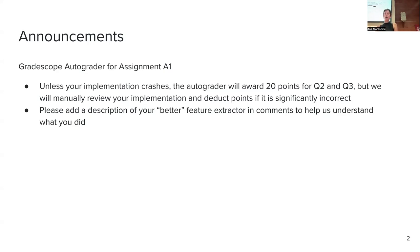Just a heads up: for Q1, the instructions require you to reach a certain level of accuracy and depending on what accuracy you achieve we are awarding some points. However, for Q2 and Q3 the instructions are to try the other feature representation and implement a bigram feature extractor — you have to implement it yourself. Unless your code crashes, the auto-grader will give you maximum points for Q2 and Q3, but we will manually review what you have implemented, so there might be some deduction if your bigram implementation didn't crash but is completely wrong.